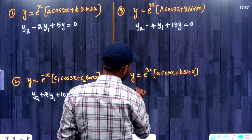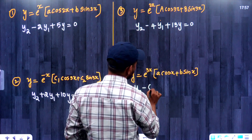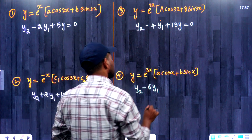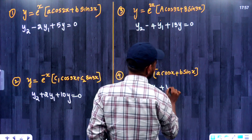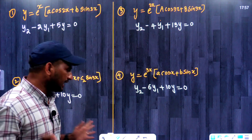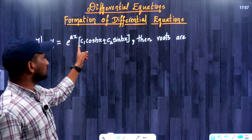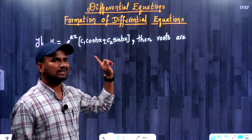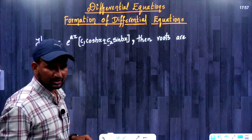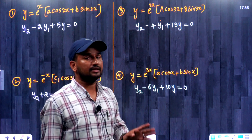The answer for this question is y2 minus 6y1 plus 10y is equal to 0. These questions are all in the form y equals e power ax times c1 cos bx plus or minus c2 sin bx. Even with one step, we can easily answer this type of questions.